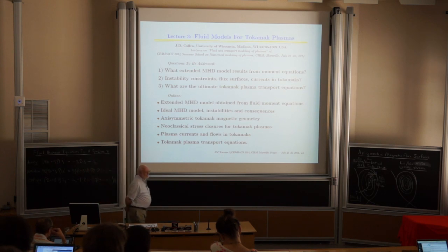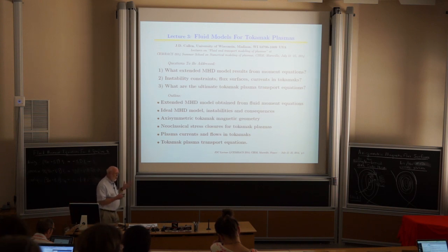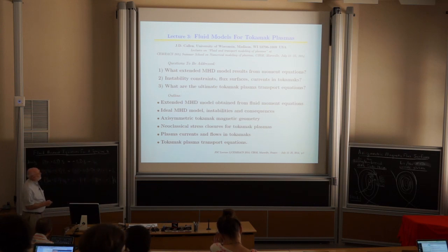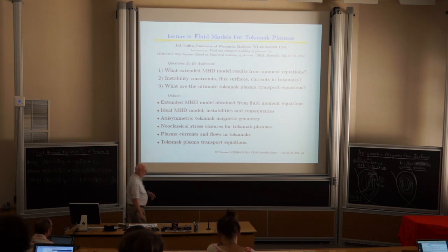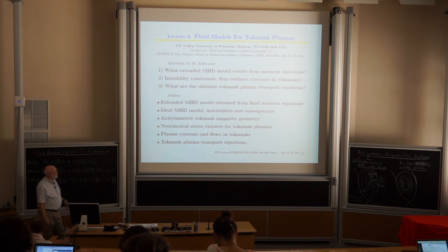We'll briefly discuss the constraints that these MHD high-fast processes cause, and then what the self-consistent transport equations across magnetic field lines look like. We'll cover how to get extended MHD from fluid moment equations, ideal MHD instabilities and consequences, axisymmetric toroidal geometry, neoclassical stress closures for tokamak plasmas, natural plasma currents and flows, and finally tokamak plasma transport equations.